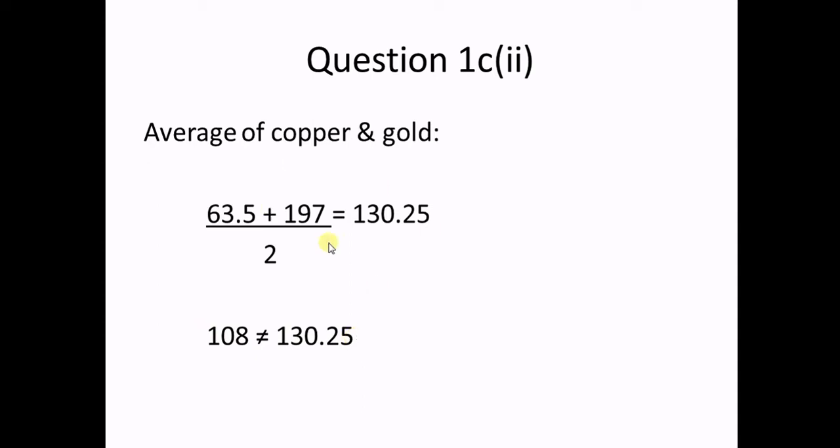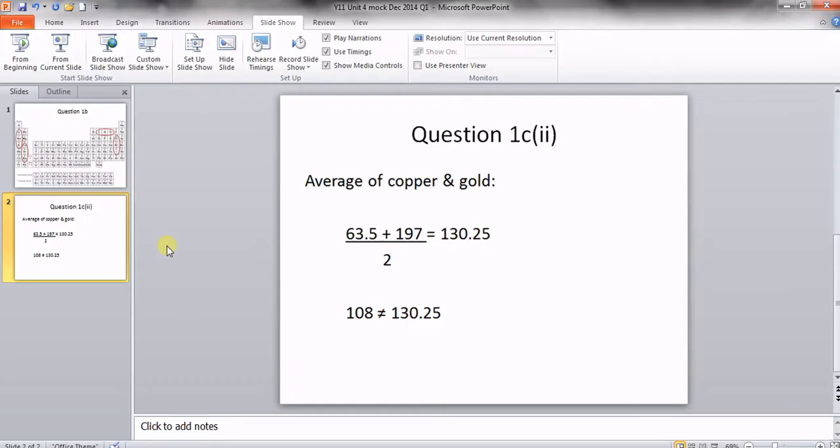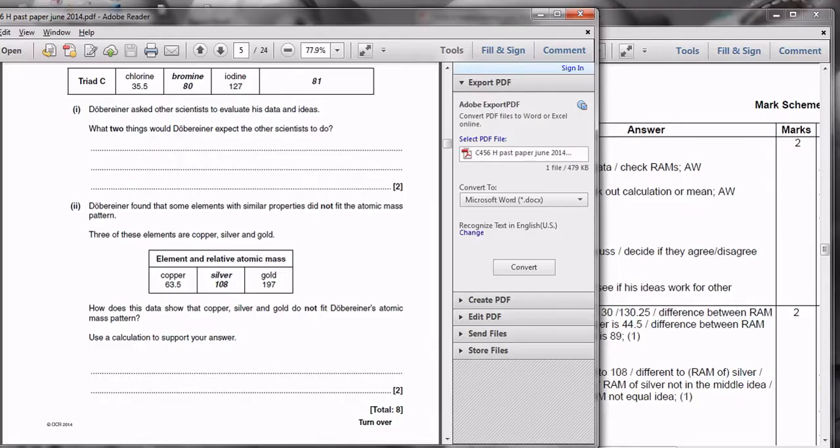Now a lot of you did this calculation here and then didn't go on to say that 108 is not 130.25 or that they're not close. Some of you worked out the mass of all three at that point to get about 120, so you added these three up and divided by three. That's not the rules of the triads and so you wouldn't get the mark for that either.